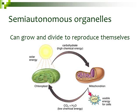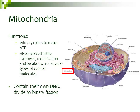We'll start off looking at the mitochondria. The mitochondria's primary role is to make ATP using cellular respiration. In the next unit, we're going to get into the specifics of cellular respiration. In addition to making ATP or these energy storage molecules, mitochondria can also synthesize, modify, and break down several types of cellular molecules. So they do have this secondary function as well.